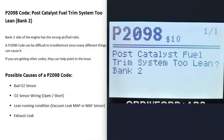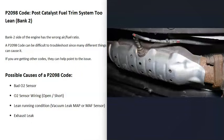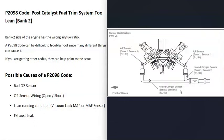The first possible cause of a P2098 code is a bad O2 sensor — one of those sensors may have failed or something gone wrong with it. Also keep in mind that the wiring going to it — if there's anything wrong with that, like an open, short, or bad connection — that's going to cause the same symptoms as a bad sensor.